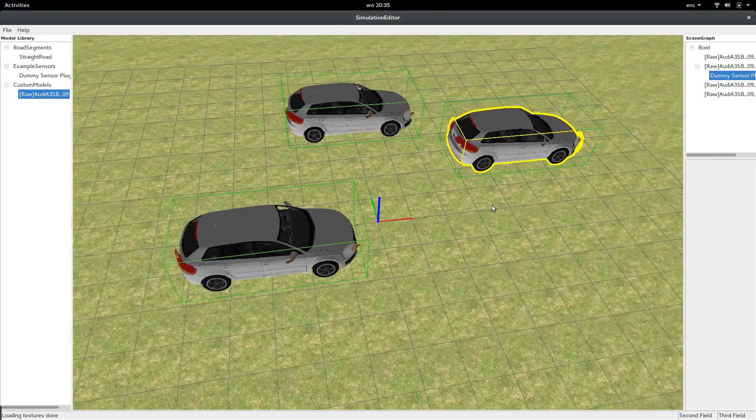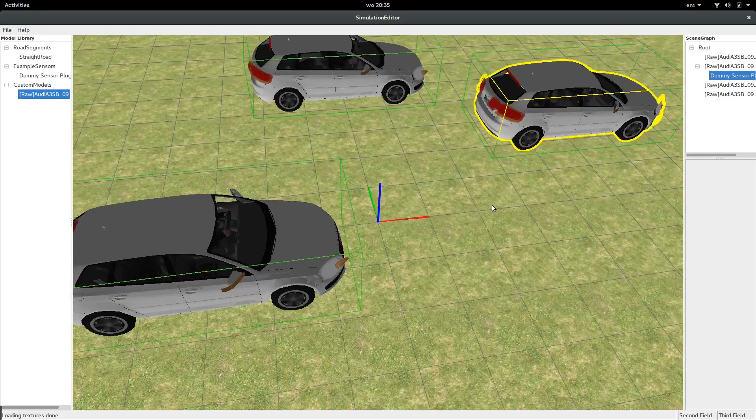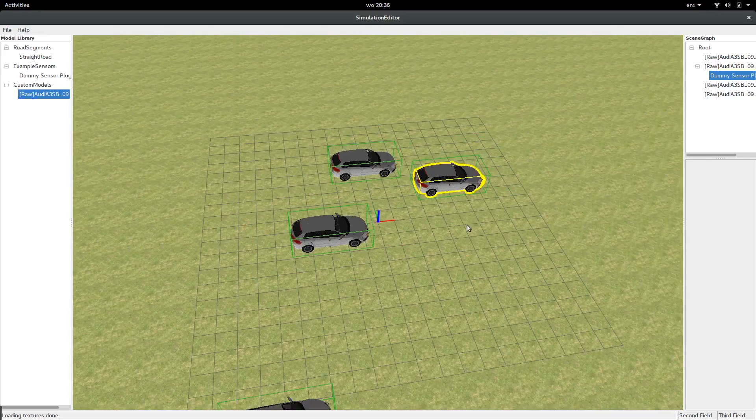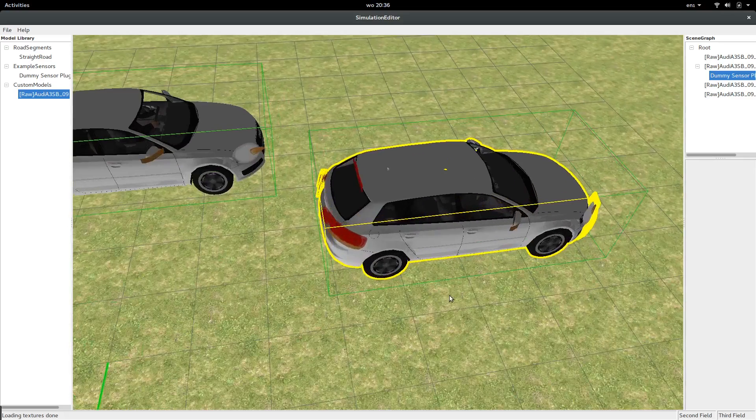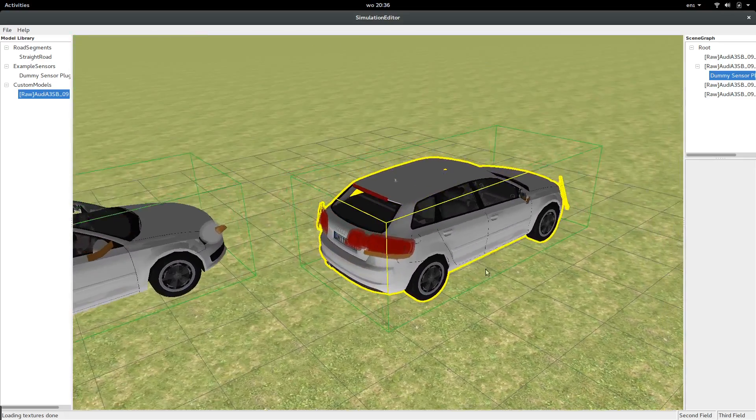And also when you zoom in, zoom out, it always has the same thickness. So this selection is a lot better than the previous method.